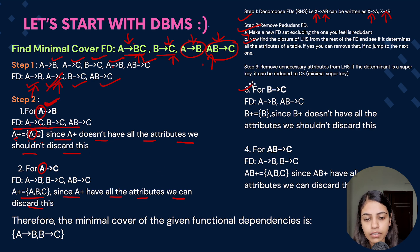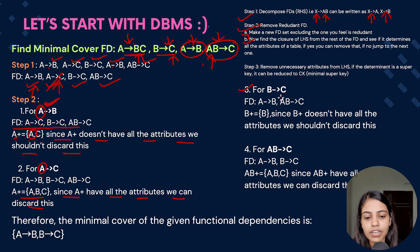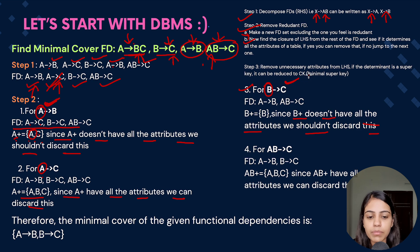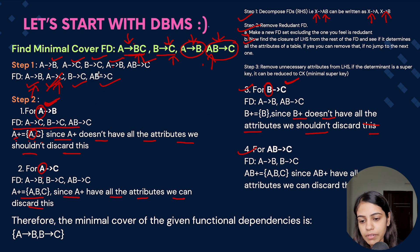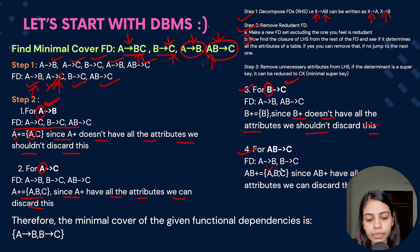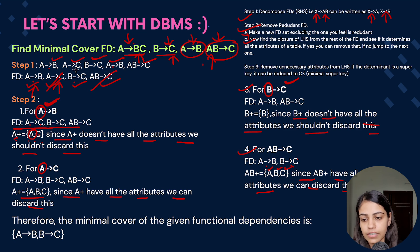Next, assume B determines C is redundant. Since we already discarded A determines C, the new set is: A determines B and AB determines C. The closure of B gives us only B — since it does not have all attributes, we cannot discard B determines C. Finally, assume AB determines C is redundant. The new set is: A determines B and B determines C. The closure of AB — A gives B, B gives C — so AB closure has all attributes. Therefore, we can discard AB determines C.